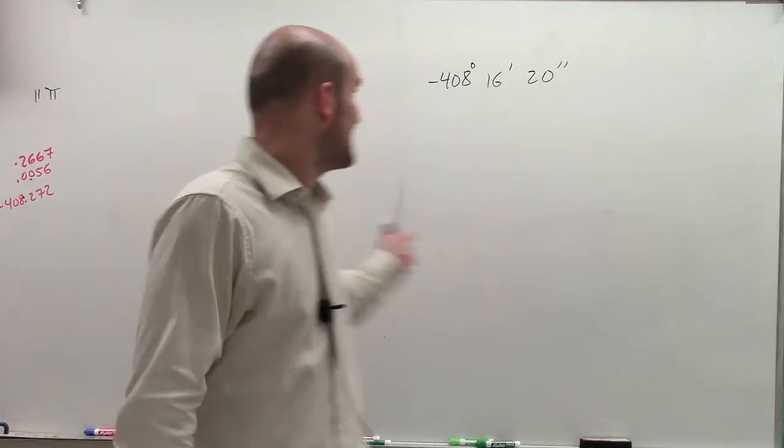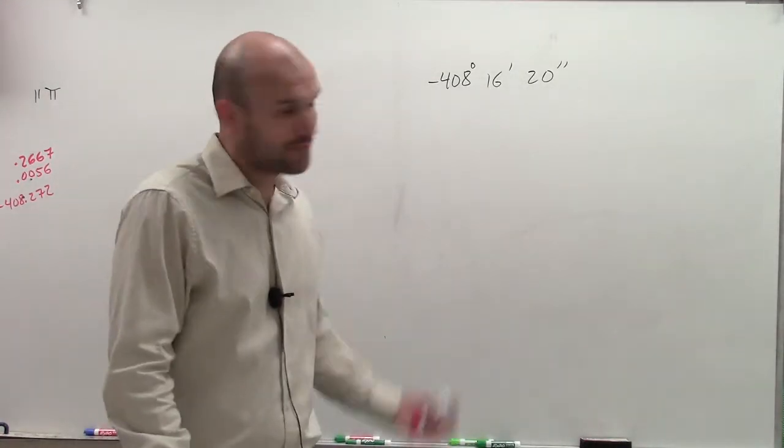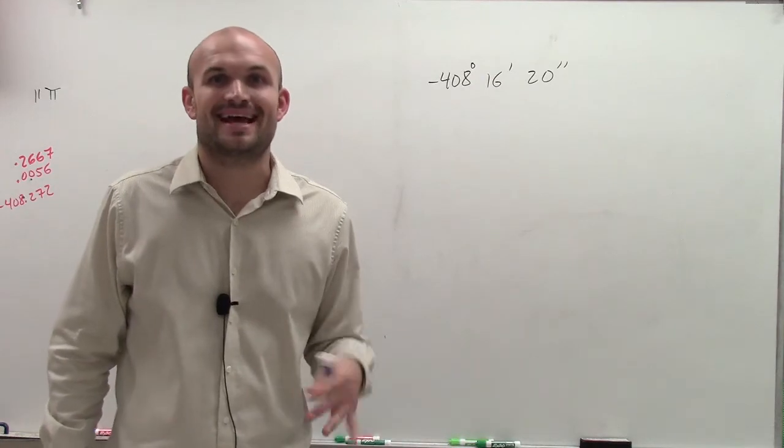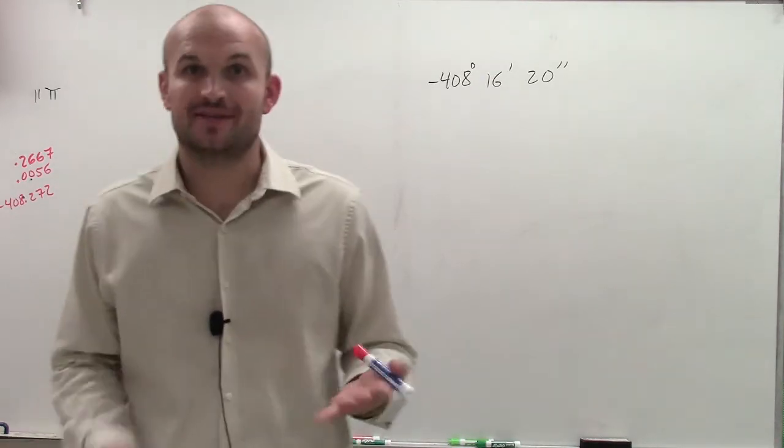What I have here is -408 degrees, 16 minutes, and 20 seconds. How do I write that as a decimal angle using decimals rather than minutes and seconds?